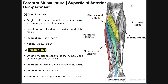In the previous video, we discussed the superficial layer of the anterior musculature of the forearm. We mentioned the brachioradialis, pronator teres, flexor carpi radialis, palmaris longus, and flexor carpi ulnaris. These five muscles constitute the superficial layer.